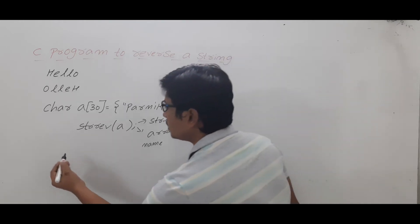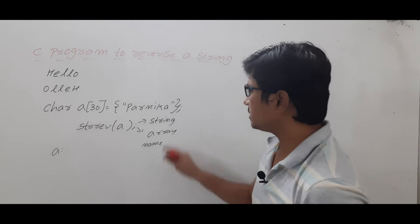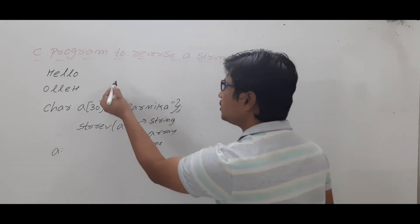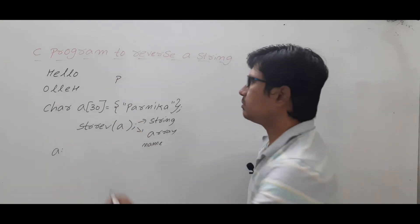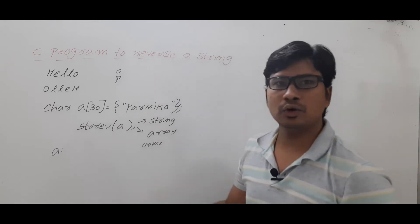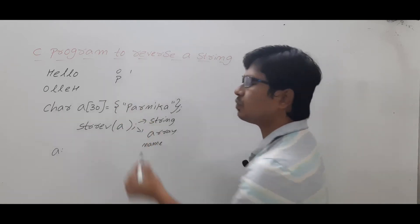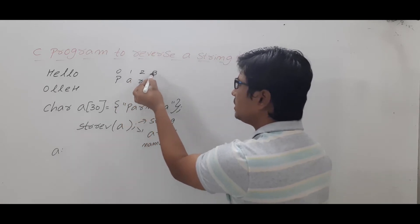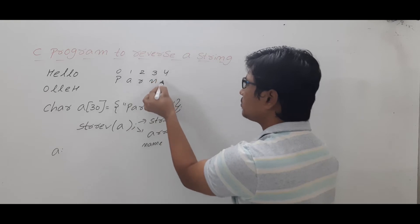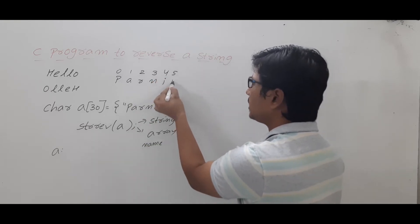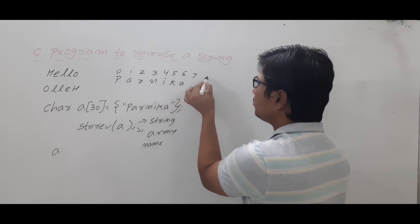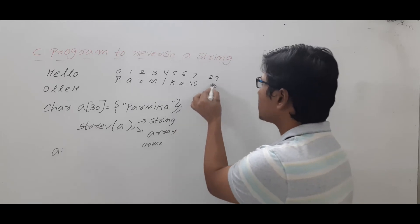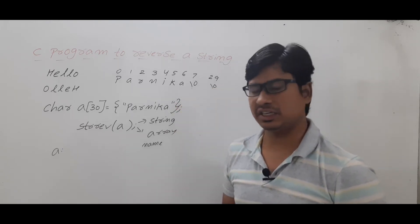So if I specify 'a' — the name of the array — in the function strrev, and the array contains the string 'Pannika', then it will store it in reverse order. Initially it was stored as 'Pannika', so at index 0 character P is there, index 1 has A, index 2 has R, index 3 has N, index 4 has I, index 5 has K, index 6 has A, and from index 7 to 29 you will have backslash 0. The purpose of backslash 0 is to recognize the end of the string.